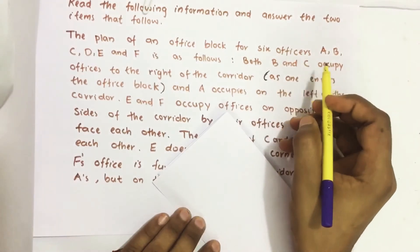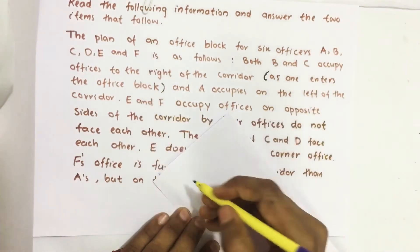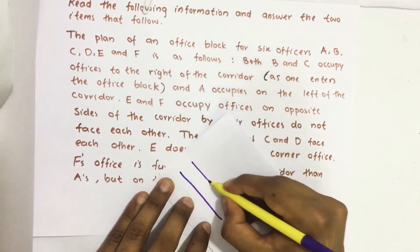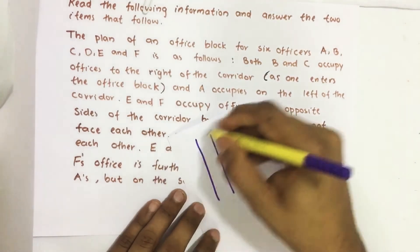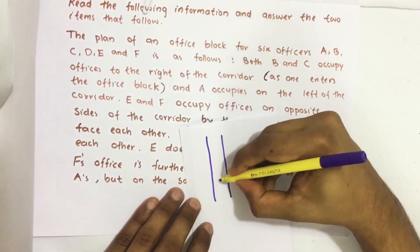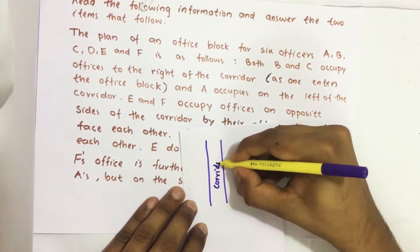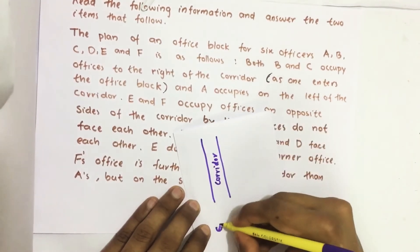So both B and C occupy offices to the right of the corridor. Suppose this is the office block and this is corridor. This is the entrance.